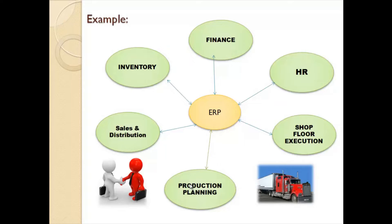So the sales team will approach the production planning department for manufacturing the product. The production planning team checks with inventory for the availability of raw material. If the raw material is not available, the planning team buys the raw material from the vendors. Then the production planning forwards the raw material to the shop floor for actual production.